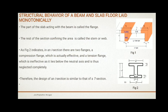Here in Figure 2 we can see an I-section consisting of two flanges and one web: a compression flange which is actually effective, and a tension flange which is ineffective because it lies below the neutral axis.